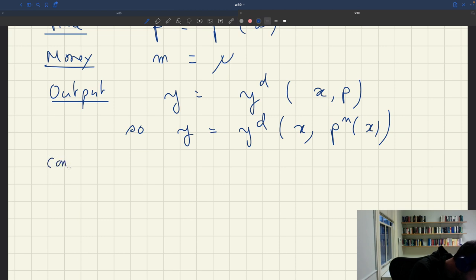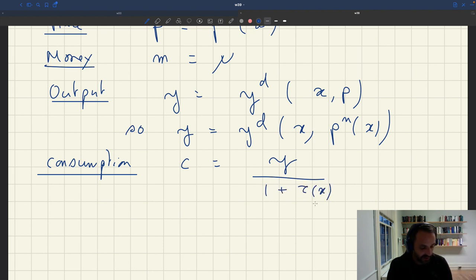What about consumption? So we said that consumption is equal to output, but discounted by 1 plus τ(x), where x is a matching weight. This captures the fact that there are matching costs. So you have to devote some services that you purchase just to matching and not to consumption.